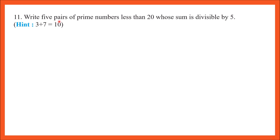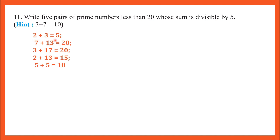Question number 11: write 5 pairs of prime numbers less than 20 whose sum is divisible by 5. Divisible by 5 means the remainder is 0. Examples: 2 + 3 = 5, 7 + 13 = 20, 17 + 3 = 20, 13 + 2 = 15, and 5 + 5 = 10. Complete this list with more examples in the comments.